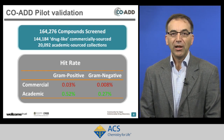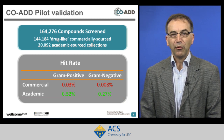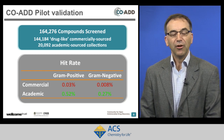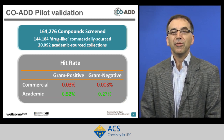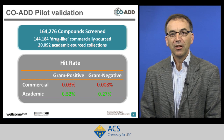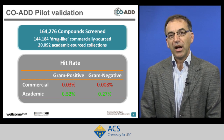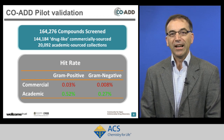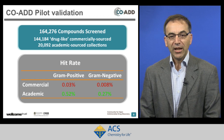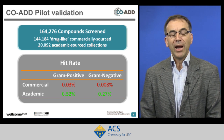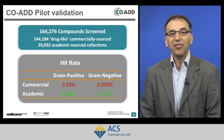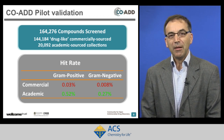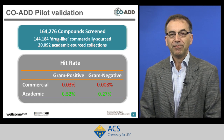COAD has done a pilot study to validate our workflow and tested over 160,000 compounds. The majority of these were from drug-like commercial libraries, but over 20,000 of them were from academic sources. And if you look at the hit rate for both gram-positive and gram-negative organisms, the academic collection had a much higher hit rate.